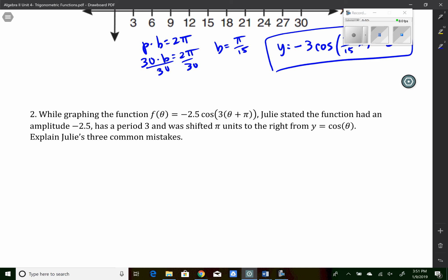Well, number one, Julie's mistake here for amplitude is amplitude can't be a negative value. Amplitude is a distance. So Julie's mistake is the amplitude is always positive, right? The negative is just a reflector. It's reflecting the graph over something.